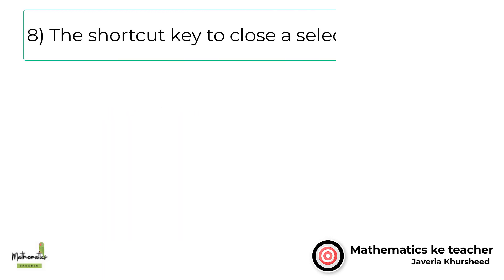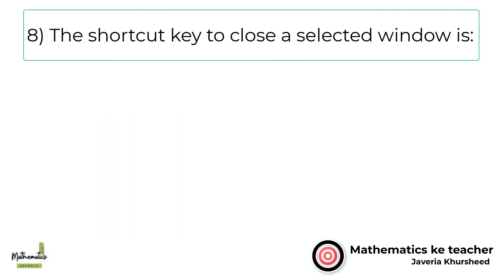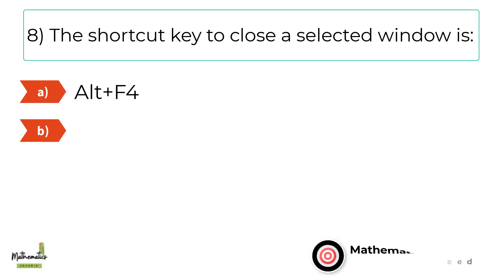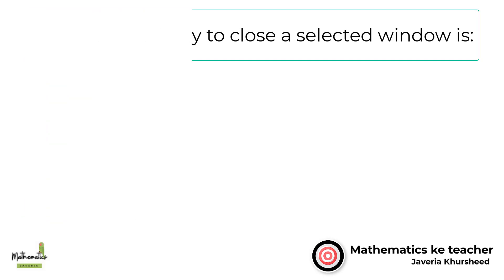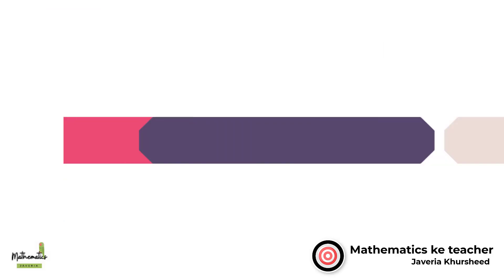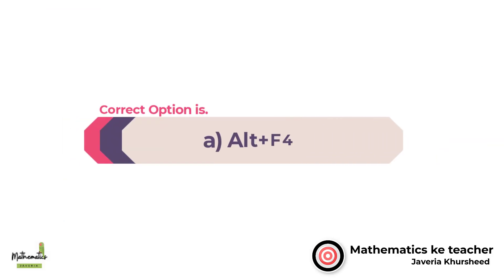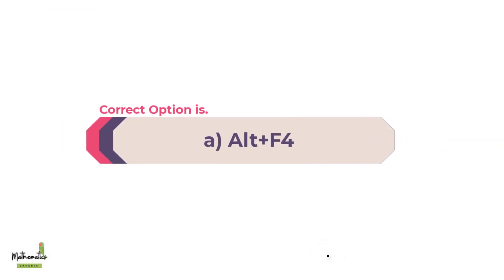Number 8. The shortcut key to close a selected window is. A. Alt plus F4. B. Control plus F4. C. Alt plus F5. D. Alt plus F3. Correct option is A. Alt plus F4.